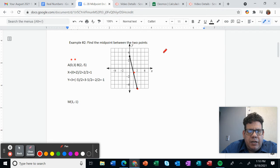And the next one, which is for y, we have 3, which is the first one, and then we have negative 5, which is the second one. So 3 plus negative 5 divided by 2 is 3 minus 5 divided by 2.